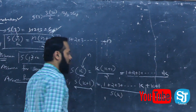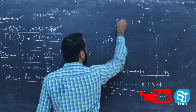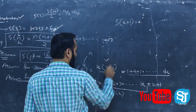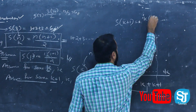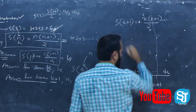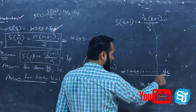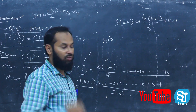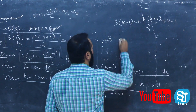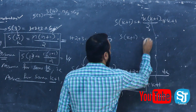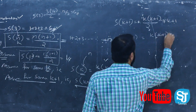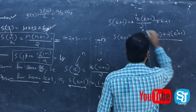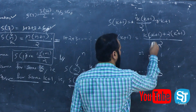So S of k plus 1 equals k(k+1)/2 plus k plus 1. Cross multiplying: k into k plus 1 plus 2 into k plus 1, all divided by 2. That simplifies with s equal to k plus 1.